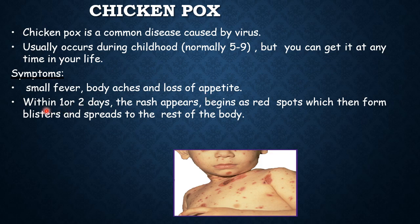Within one or two days after infection, rashes appear. It begins as red spots which then form blisters. Blisters are small bubbles on the skin which are filled with a watery liquid, and it spreads to the rest of the body.